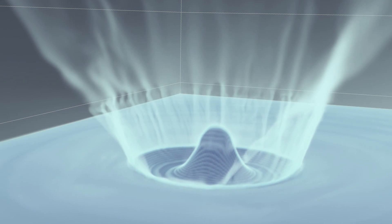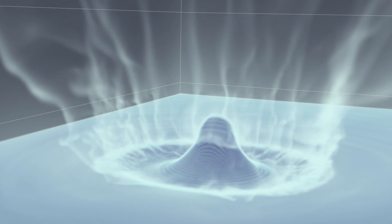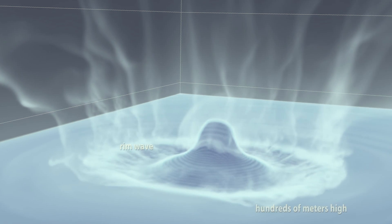Water rushes into the crater, forming a water jet which can be several kilometers high. This jet collapses to form a rim wave, which is hundreds of meters high.